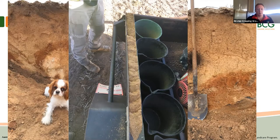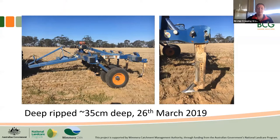What we did was deep rip with a grizzly deep ripper — ripped to about a depth of 35 centimetres on 30cm spacing. We did this quite early on in the season, on the 26th of March last year. As you can see, it's just a straight shank, and while it had points on the bottom, they weren't particularly wide as this ripper had been used a lot prior to the trial.